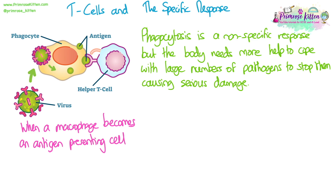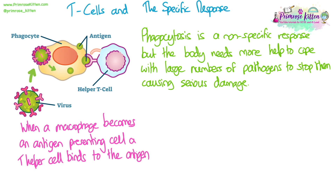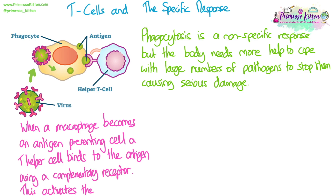It starts with the phagocyte becoming an antigen presenting cell. It takes the antigens from the pathogen and presents them on its cell surface membrane — it ingests the pathogen, breaks it down, removes the antigens, and puts them onto its own membrane. The T helper cell will then bind to that antigen with a receptor on its cell surface membrane. The receptor is complementary in shape to the antigen, and this binding activates the T helper cell.